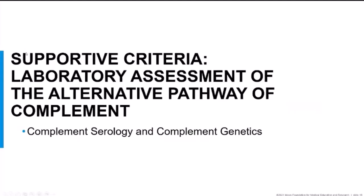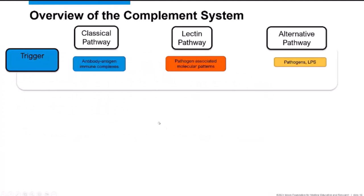I am a consultant in the protein immunology lab, which performs complement serology testing. The complement system has three main pathways: the classical pathway, the lectin pathway, and the alternative pathway. They have different initiation molecules — an antibody-antigen immune complex triggers the classical pathway; pathogen-associated molecular patterns trigger the lectin pathway; and the alternative pathway is triggered by viruses, fungi, lipopolysaccharides, and cobra venom, and is always active at low levels in a surveillance role.